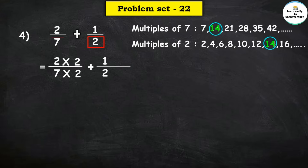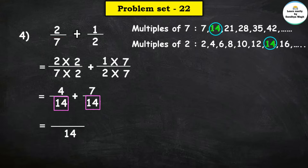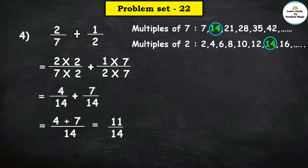For 2 upon 7: multiply denominator 7 by 2 to get 14, and numerator 2 by 2 as well. For 1 upon 2: multiply denominator 2 by 7 to get 14, and numerator 1 by 7. So: 2 times 2 = 4, 7 times 2 = 14. Plus 1 times 7 = 7, 2 times 7 = 14. Common denominator is 14. Numerator: 4 plus 7 equals 11, denominator 14.